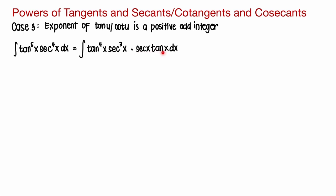Since secant x tangent x dx will be our du, our substitution will be u equals secant x. Everything in the integrand must be expressed in terms of secant. So we have tangent to the power of 4x, which we write as tangent squared x raised to the power of 2, times secant cubed x, times secant x tangent x dx.